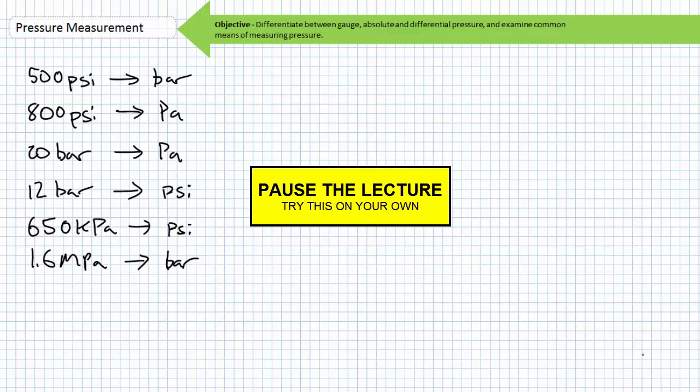Pause the lecture and try these example problems on for size. This should be a review of the techniques I illustrated in the unit conversion and hydraulics math lecture. If you get the same answers I do, you're tracking. If you don't, you're off track and you need to get yourself back on track as soon as possible because this train is rolling with or without you.